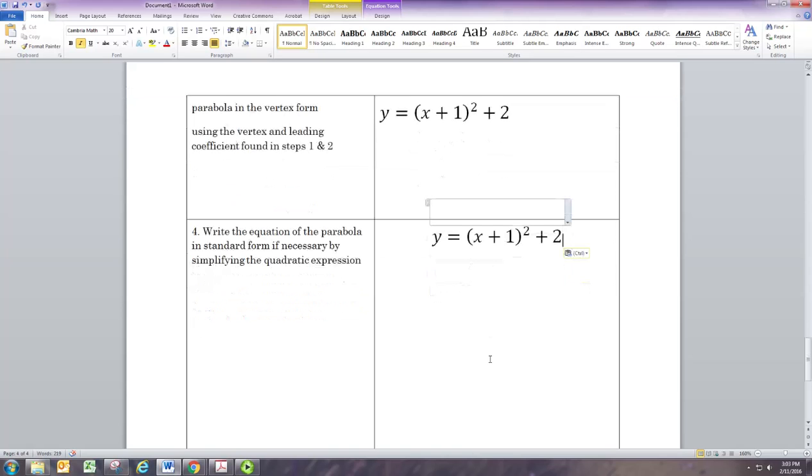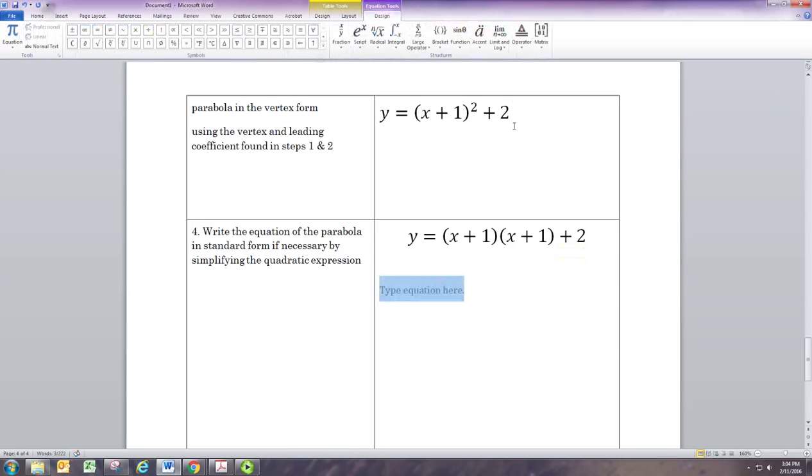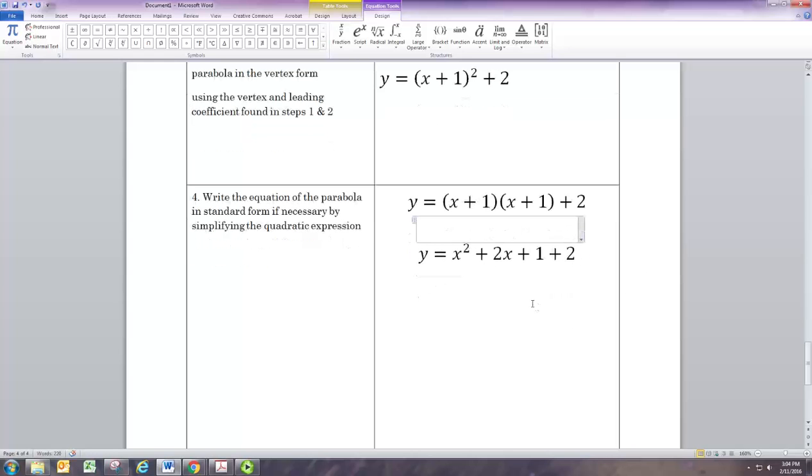If we want to have this in standard form, we need to expand it as we did before. So (x + 1) quantity squared is (x + 1) times (x + 1). If we multiply that out, we have x times x, which is x squared, plus x plus x, that would be plus 2x, and 1 times 1 is 1. Don't forget the plus 2 there. Combine like terms to finish, just add the 1 and the 2 and get a 3. And that's the standard form.